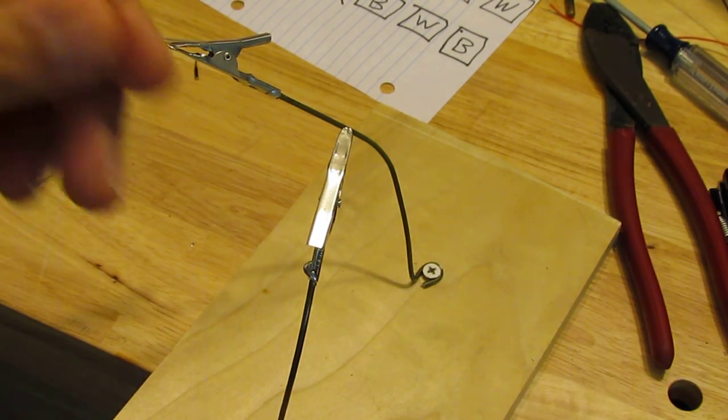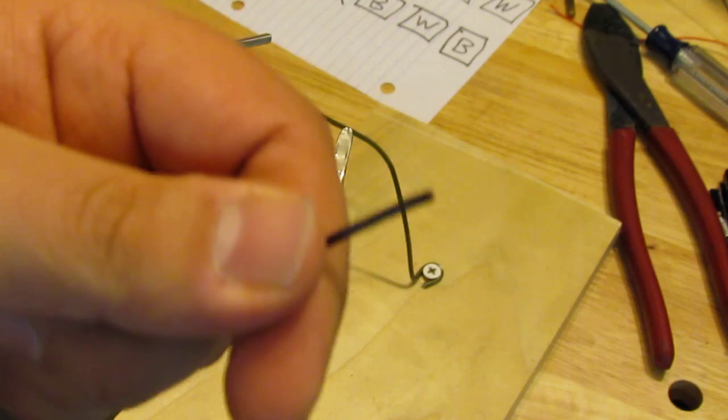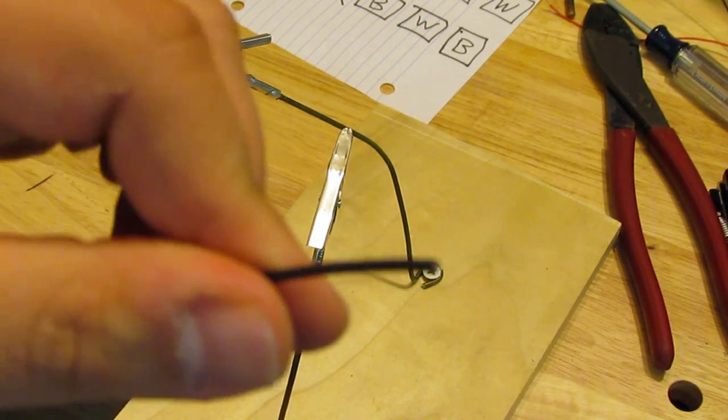Alright, in this video I'm going to be showing you how to strip and tin your wire. This is going to make it ready to be attached to the LED.